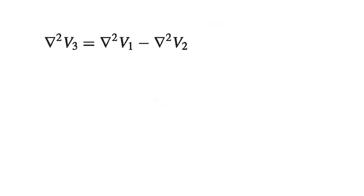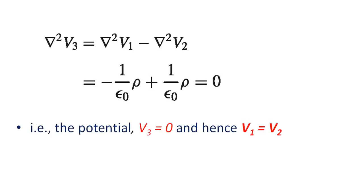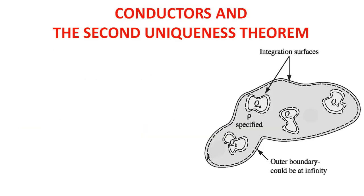Then del squared V3 will be equal to del squared of (V1 minus V2), which equals del squared V1 minus del squared V2. That is equal to minus 1 over epsilon-zero times rho, minus minus 1 over epsilon-zero times rho, which equals 0. Therefore V3 equal to 0, and hence V1 equal to V2.